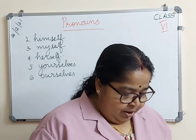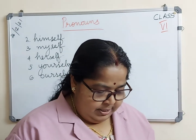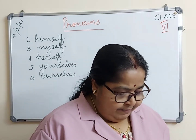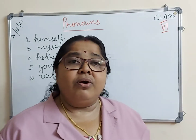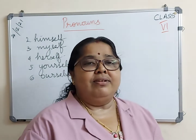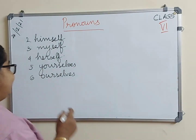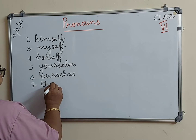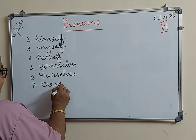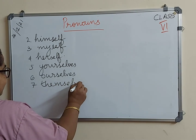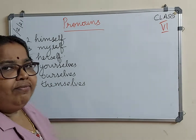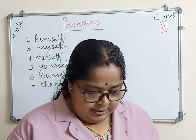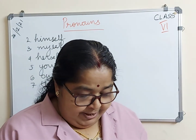Question number seven: All the winners thought themselves lucky. The pronoun is 'themselves' — third person — and it is a reflexive pronoun.